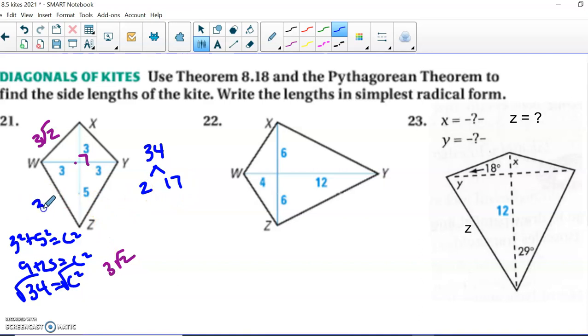So it looks like 34 is already simplified. So we're just going to leave it as the square root of 34. All right, let's try one more where they give us an angle and a side length. So the first thing I'm going to do is write everything I know.